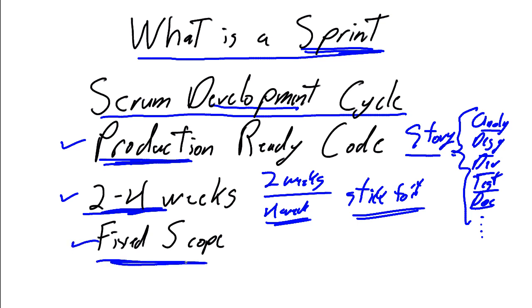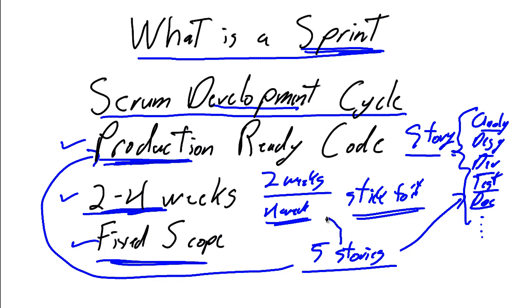Sprints are fixed scope. We say we're going to complete five stories in a Sprint. Each story goes through the complete lifecycle. Each story is production-ready. And each story is completed in the four weeks, or each of the five stories is completed in the four weeks.